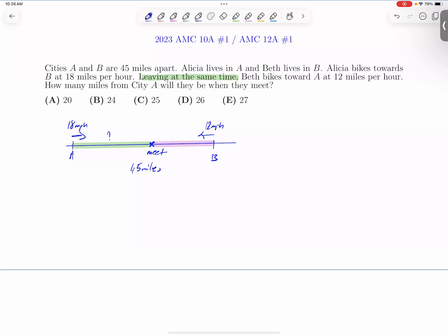Here, let's say the green distance is distance for Alicia, divided by the pink distance, which is distance for Beth. Since they bike at the same time, they are proportional to their rates. 18 to 12, which is 3 to 2.